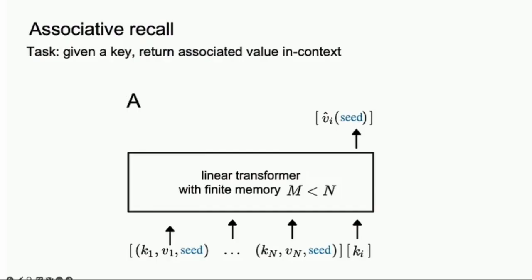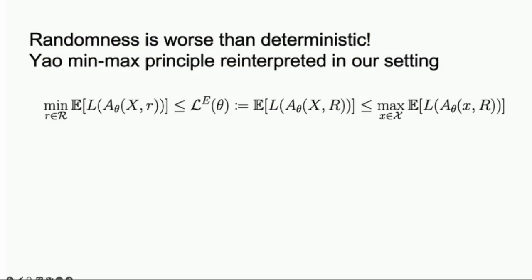Why is that? The first intuition is the following - this is a reinterpretation of the minimax principle in our setting. If you have a loss and care about the expected loss over your input, obviously there is at least one seed that will perform in expectation over the input at least as well as the expectation over the seeds.